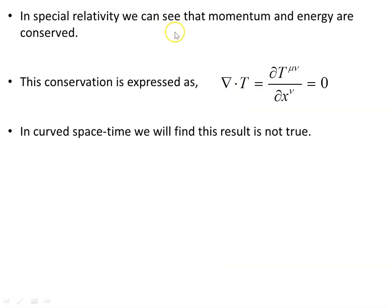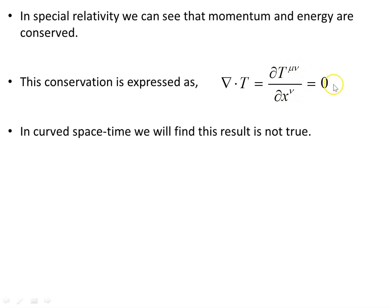So in special relativity, momentum and energy are conserved, and this conservation is expressed as del-dot-T equals zero, or in component form, dT^{mu nu}/dx^nu equals zero. Note that this component index lines up — because we're doing the divergence, not the general gradient. Del T is a different operation from del-dot-T: del-dot-T is the divergence, where the derivative index matches one of the tensor indices, summing over four terms. A general gradient del T would have a different index. In curved spacetime, we will find that this result is not true.